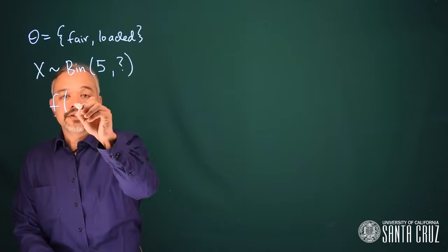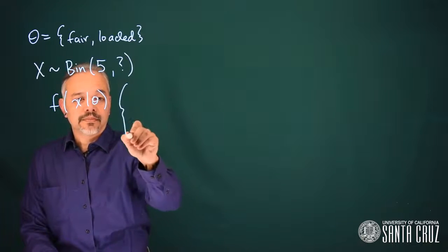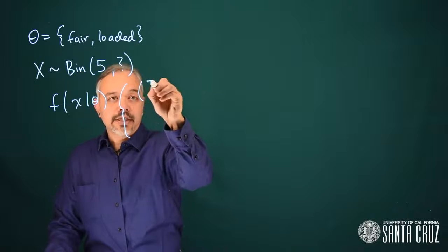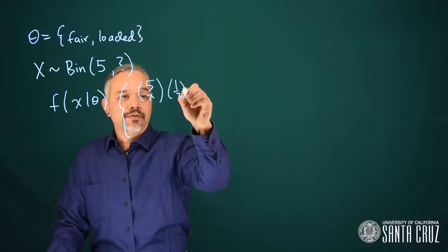So we can write a likelihood, f of x given theta, as if it's the fair coin, this will be five choose x, one half to the fifth.